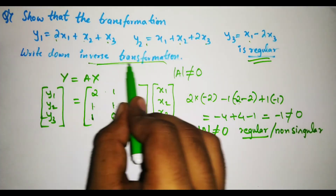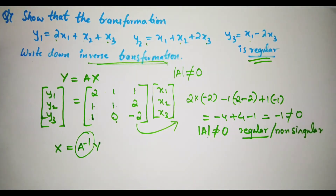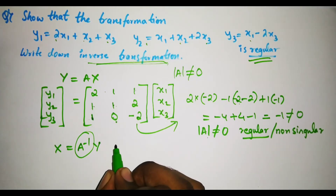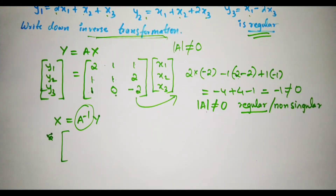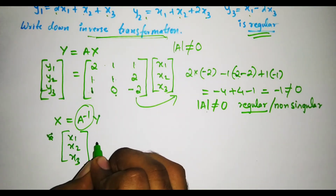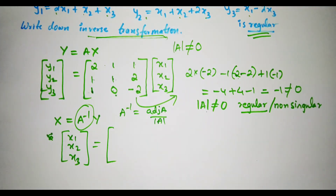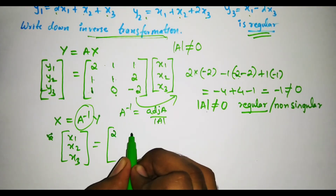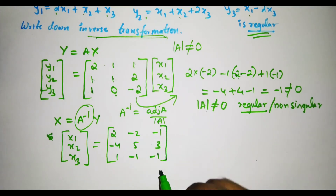Next, we have to find the inverse transformation. We know it is given as x = A inverse times y, so we need to find A inverse. A inverse is nothing but adjoint(A) divided by determinant(A). I will directly write the A inverse — if you want to learn step by step how to find the inverse, go to the video section in my channel. The A inverse is: [2, minus 2, minus 1 / minus 4, 5, 3 / 1, minus 1, minus 1].